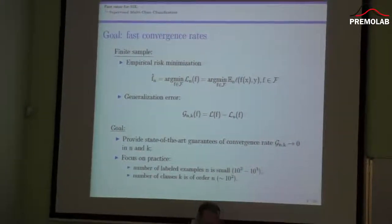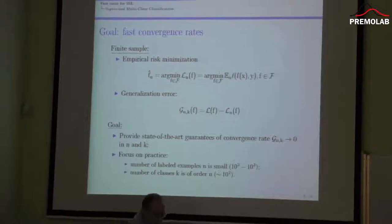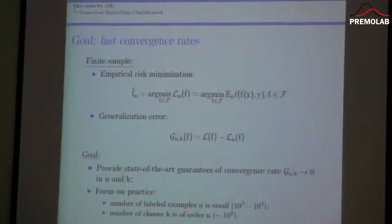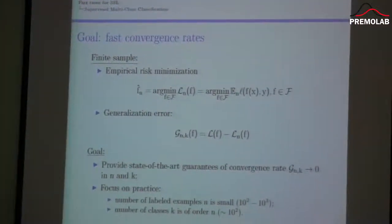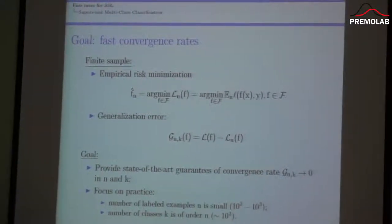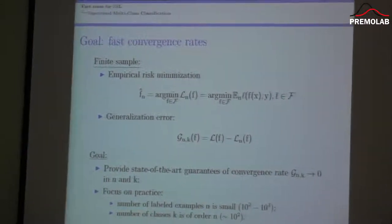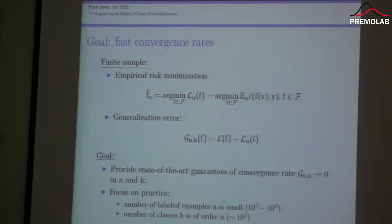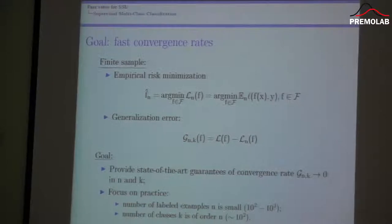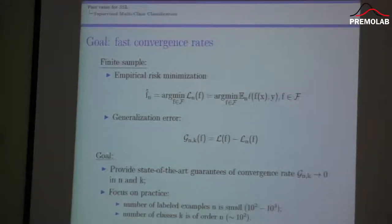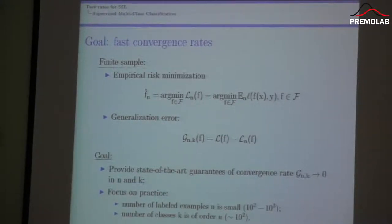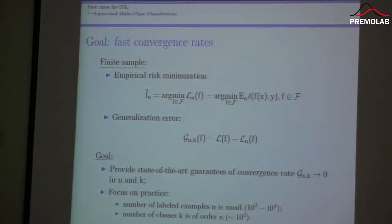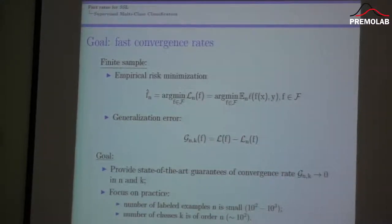What we can solve in practice is the empirical risk minimization problem. Normally for such problems we are interested in two quantities. First is generalization error — how far is the error on an unknown test set from the error on the training set. The second quantity is excess risk, which measures how far we are from the best classifier in our family. Here I will talk only about generalization error.